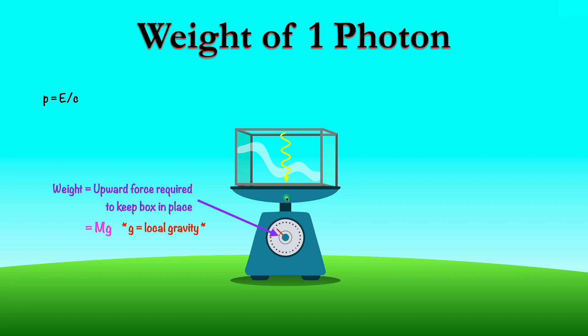Now at first glance, it would seem that the net momentum imparted on the box is zero, because initially the photon pushes the box up, and then when it gets to the bottom it pushes it back down. And this is all taking place in a very short amount of time. But actually, as the photon travels down, something funny happens to it.